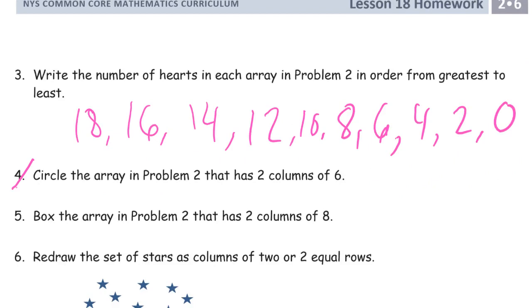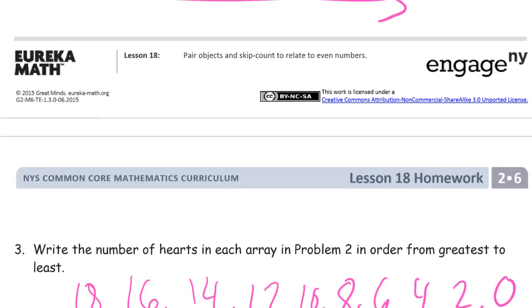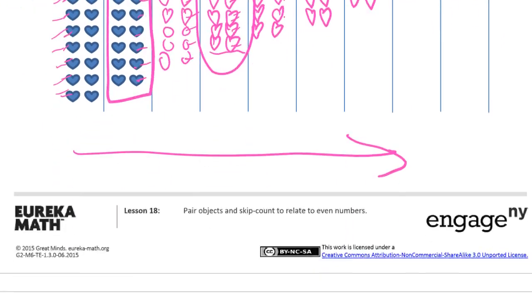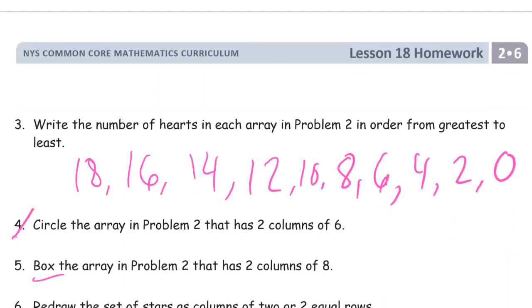And now box the array in problem two that has two columns of eight. So that's going to be this one here. Boxed. That one's done.